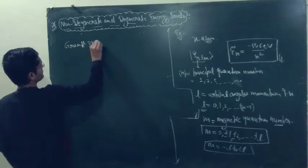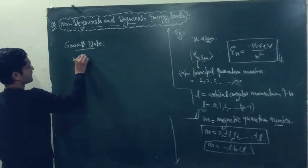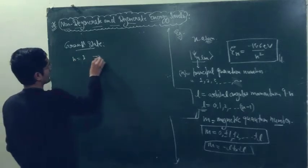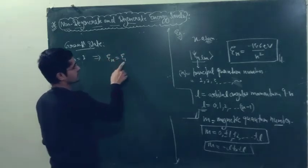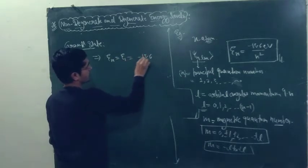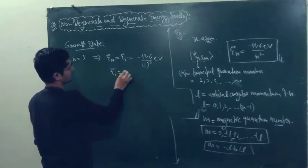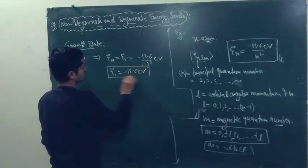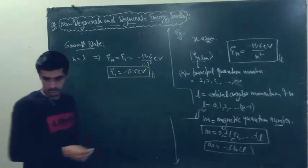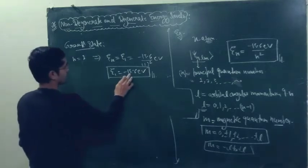Let us consider the ground state of hydrogen atom. For the ground state, n is 1. So the energy of the ground state is minus 13.6 electron volts over 1 squared, which is just minus 13.6 electron volts. This is the energy in the ground state of hydrogen atom.